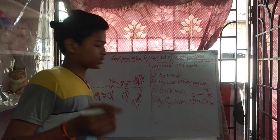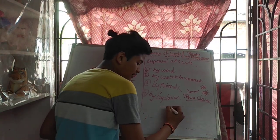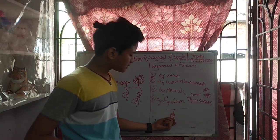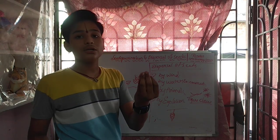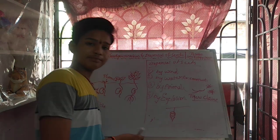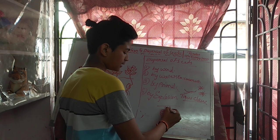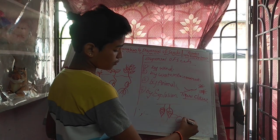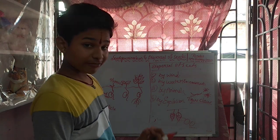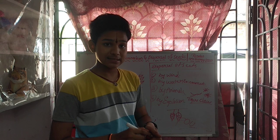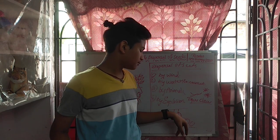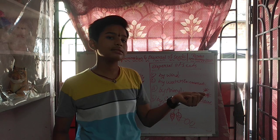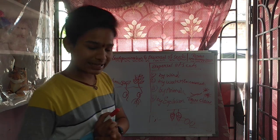Now, dispersal by explosion. Take the pea plant — the peas develop and grow bigger in size. After some days, the pea pod blasts into two parts and the seeds come out. When the pea pod is blasted, it releases force, and because of this force the seeds go to further places and develop there.